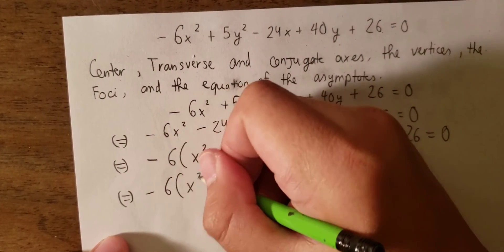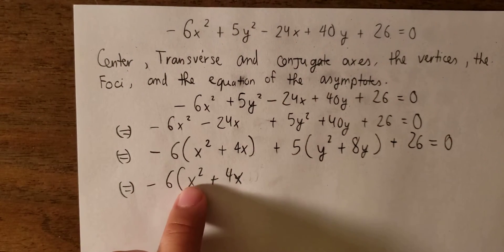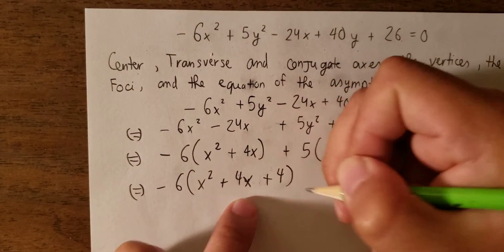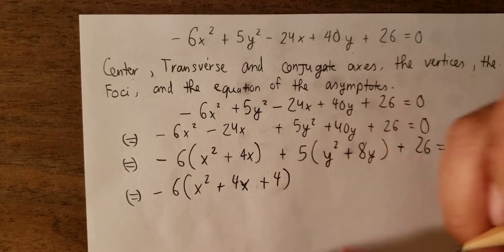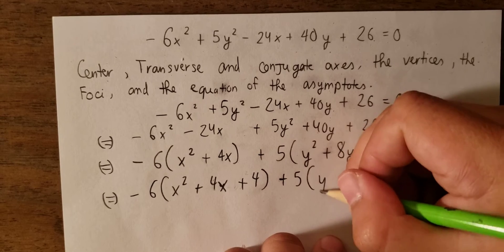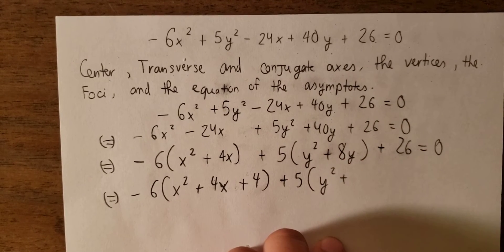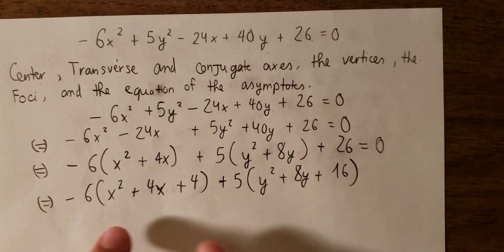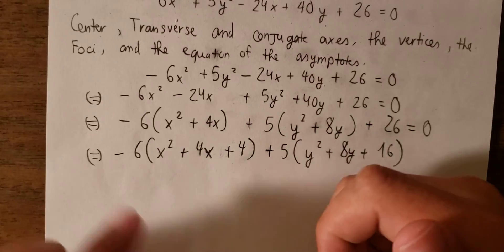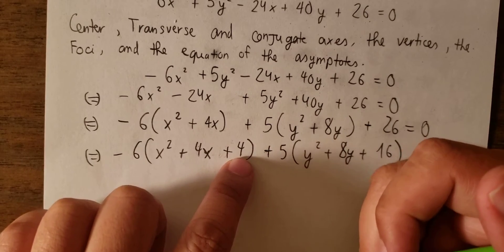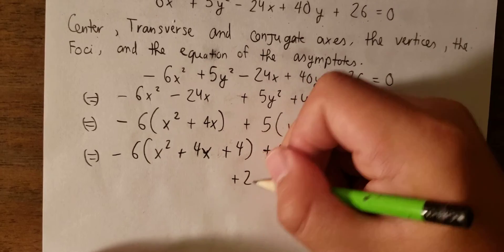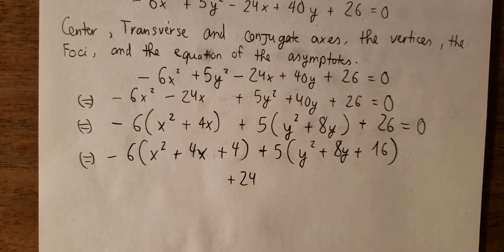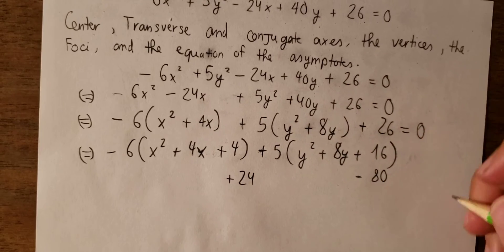To complete the square for x² plus 4x, we note that 2 multiplied by 2 gives 4, so we add 4. For the y terms, 2 multiplied by 4 gives 8, so the next number is 16. Because we added these numbers inside, we must compensate: minus 6 multiplied by 4 gives minus 24, so we add 24. And 5 multiplied by 16 gives 80, so we subtract 80, plus 26.